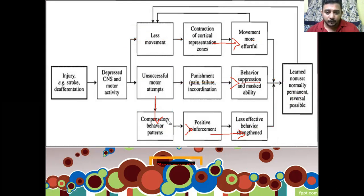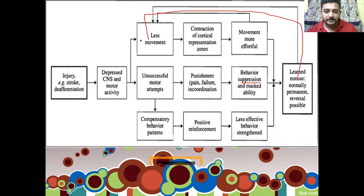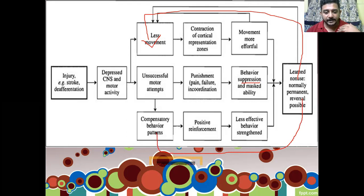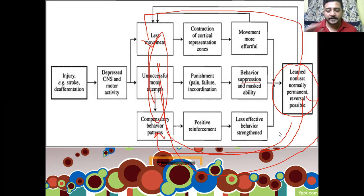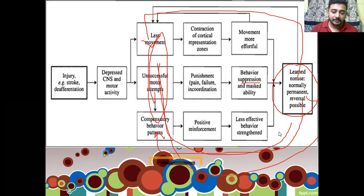One important thing physiotherapists should understand is that it is reversible — reversal is possible. What needs to be done is to take the patient back to address that first point. In order to reverse all these things, we have to attend to that area. If nobody attends to the patient, there is again negative reinforcement, leading to a cyclic worsening of all three factors. The patient becomes more and more chronic and reversal is no longer possible. Constraint Induced Movement Therapy clearly shows that it is not spasticity or tone causing the problem, but less movement, unsuccessful motor attempts, and compensatory behavior.